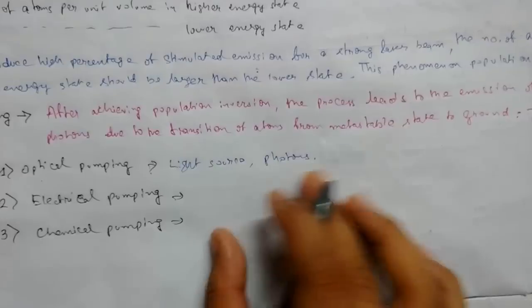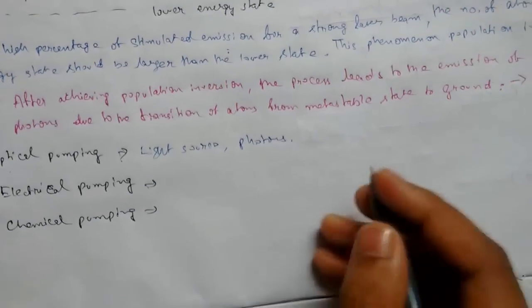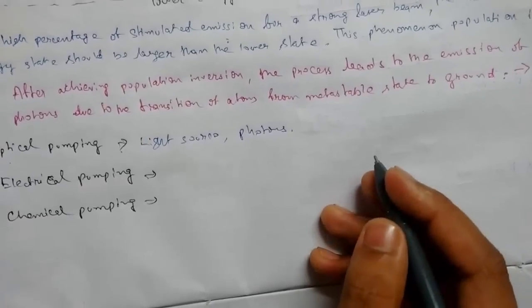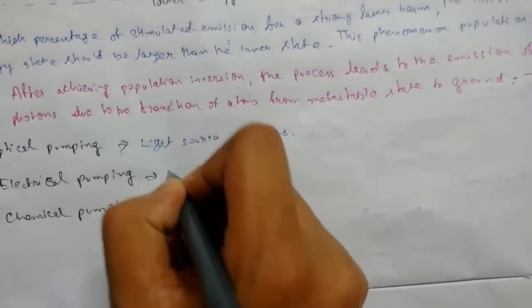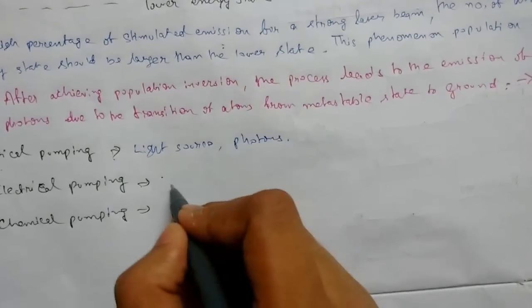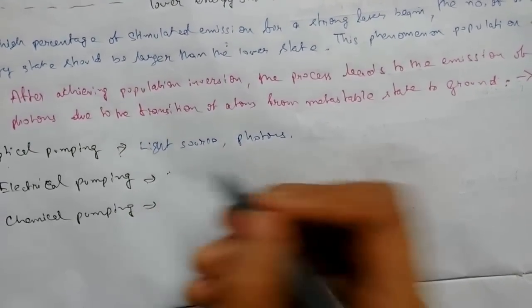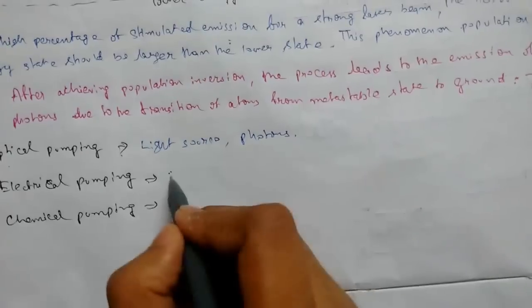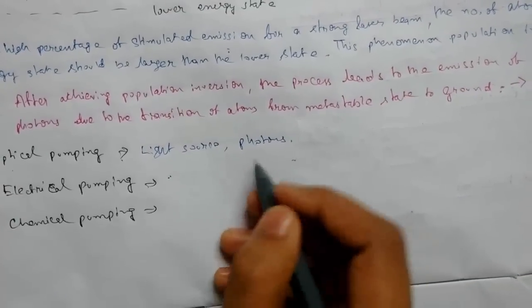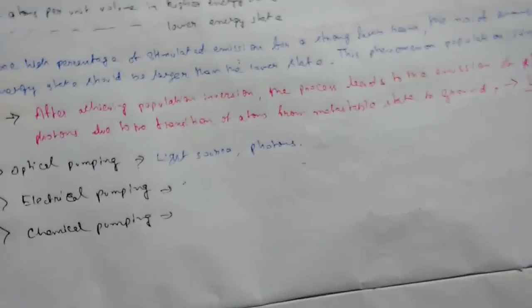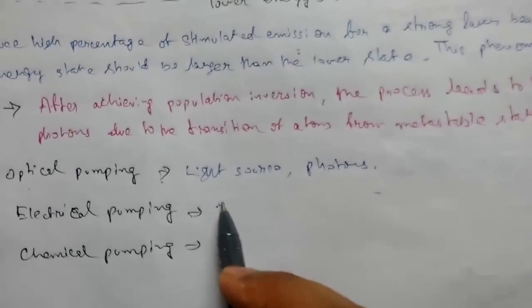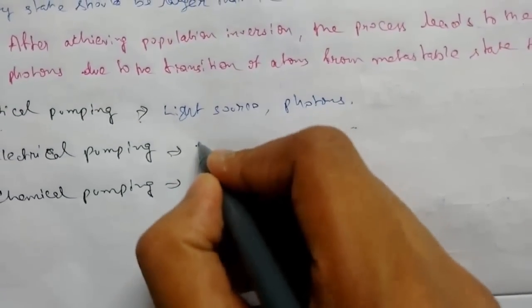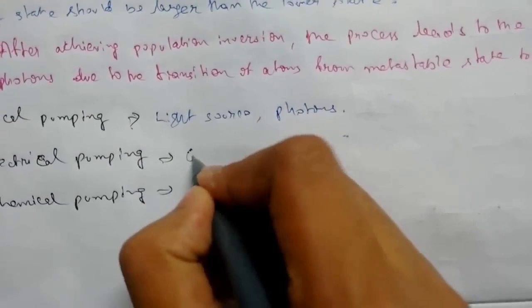In electrical pumping, electrical discharge converts the gas medium into plasma, liberating electrons. The electrons are accelerated by a strong potential field and collide with atoms, giving them an excited state, which results in pumping.